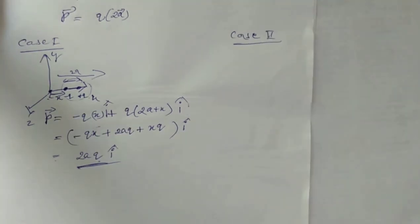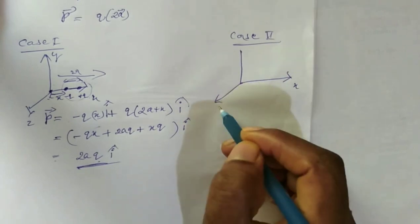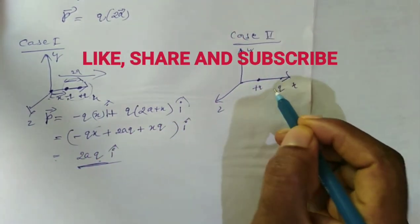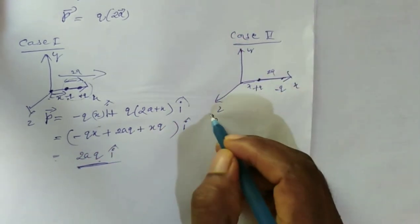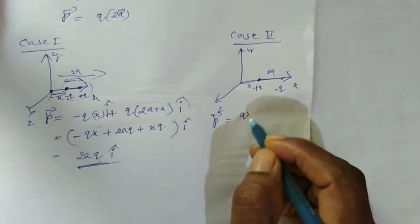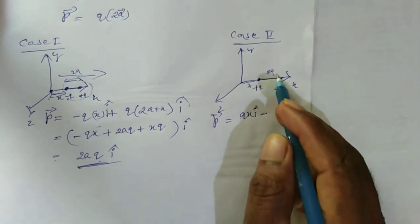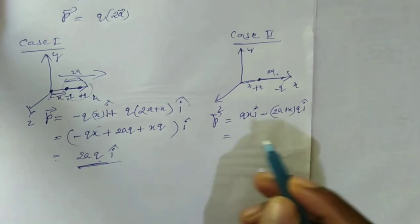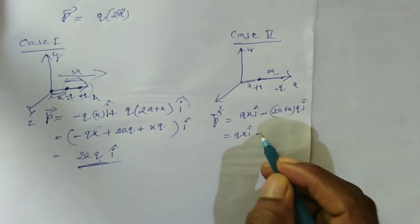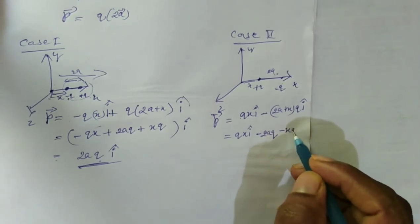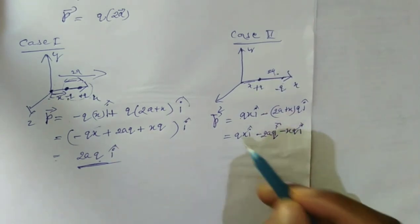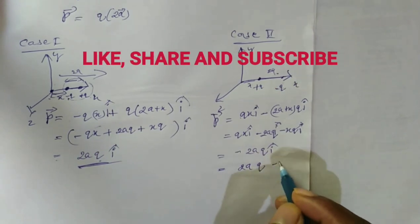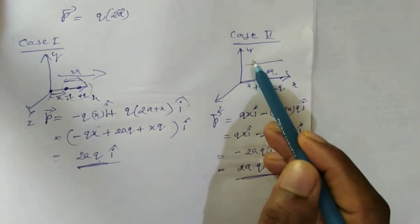In Case 2, I swap the charges: plus q is on the left and minus q is on the right, with 2a as the separation and x as the distance from the origin. The total dipole moment is p = (q)(x)î + (-q)(2a + x)î. Substituting: p = qxî - 2aqî - qxî. The qx terms cancel, giving p = -2aqî.